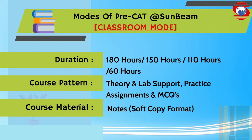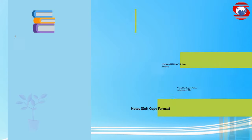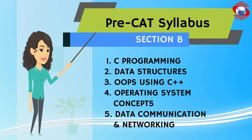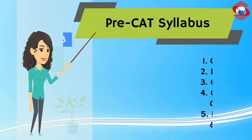Classroom mode — duration options of 180, 150, 110, or 60 hours. Course pattern includes theory and lab support, practice assignments, and MCQs. Course material provided as notes in soft copy format. Pre-CAT syllabus Section A covers quantitative aptitude, critical reasoning, and English. Section B covers C programming and data structures.